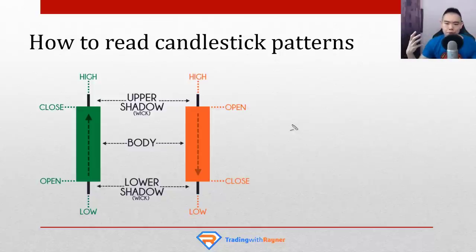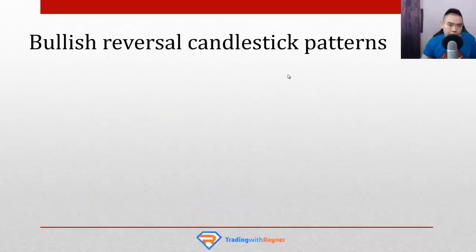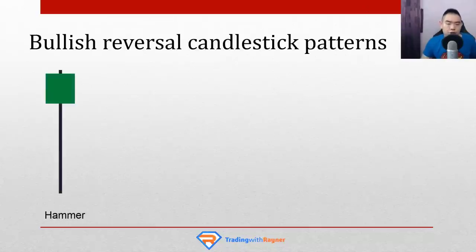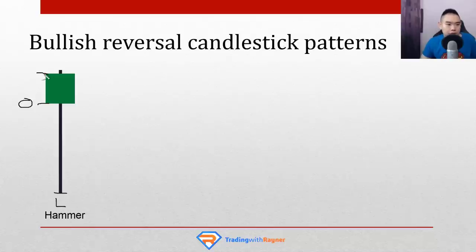Moving on, I want to share some really useful candlestick patterns to help you time your entry so you know when exactly to buy or sell. Let's talk about bullish reversal candlestick patterns. There are a few variations — I'll share two that I find useful. First is what we call a hammer. For the hammer, it's a bullish candle where the opening price is near the top, the low is far down, and the closing price is near the high. Let me explain the story behind it.